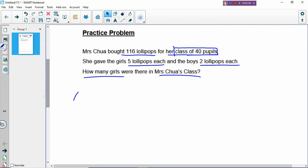How do we exactly do Assumption? You start with Assume. When you start your method, you will always have to use the word Assume. You assume all, which is the total number. What is all? All means the total pupils, all the 40 pupils, they are all boys. Why do you not assume they are girls?